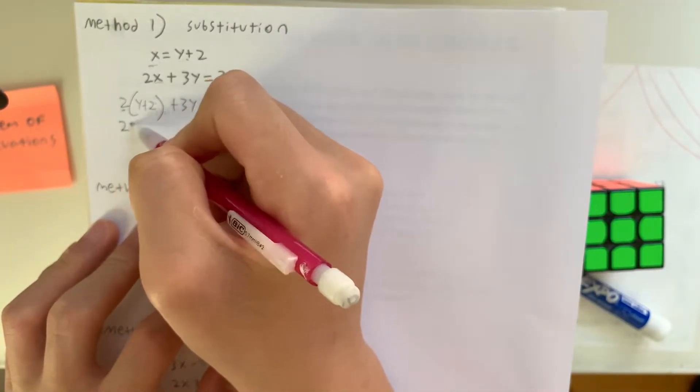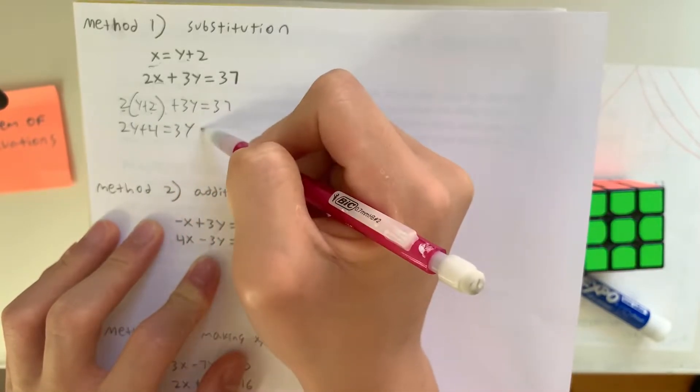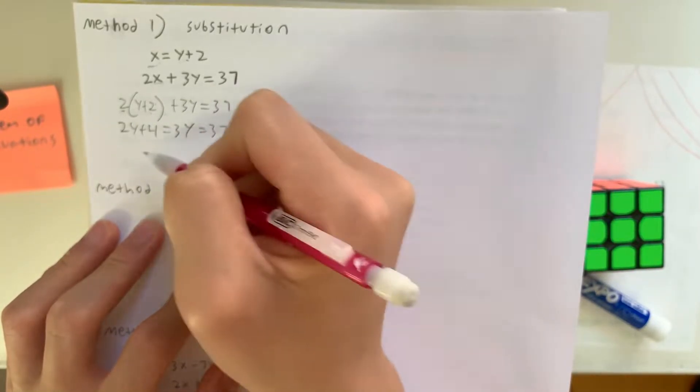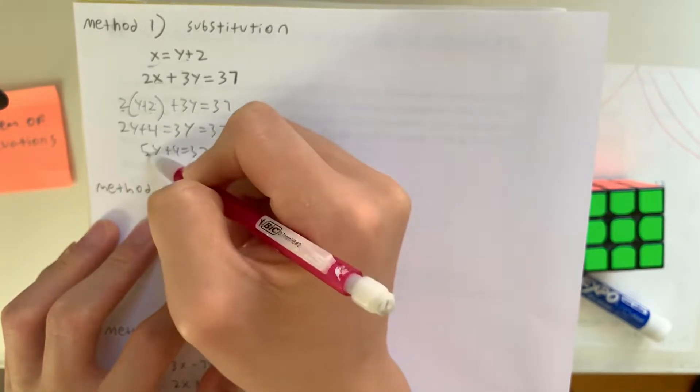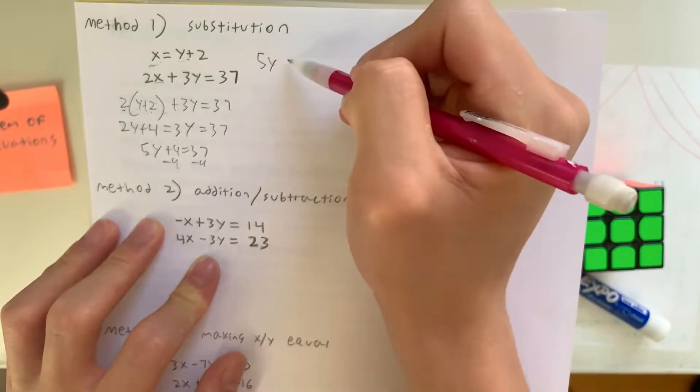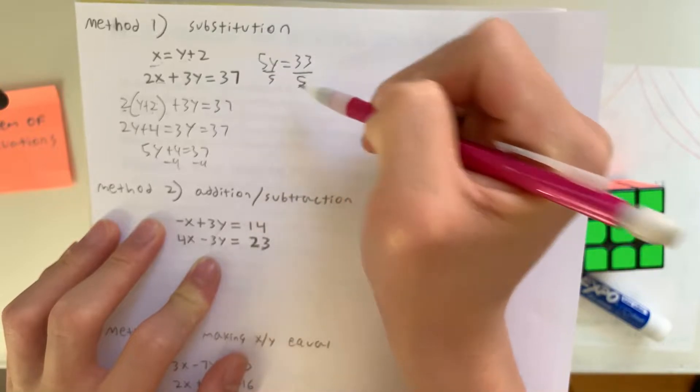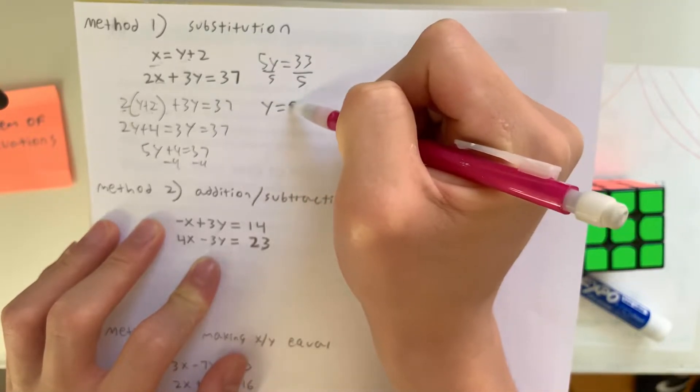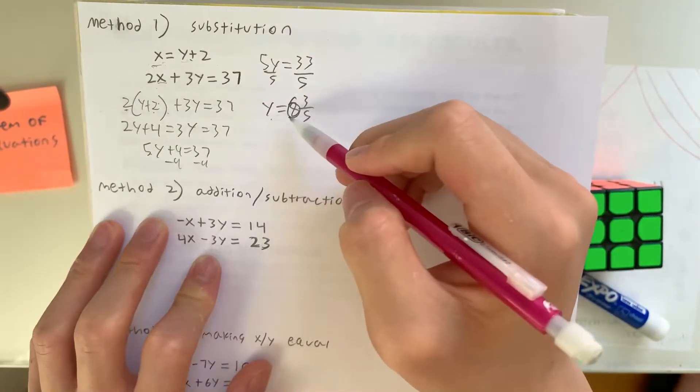We can distribute: 2y plus 4 plus 3y, which equals 37. So 5y plus 4 is equal to 37. We can subtract 4 on both sides, giving us 5y equals 33. Divide both sides by 5, giving us y equals 6 and 3 fifths.